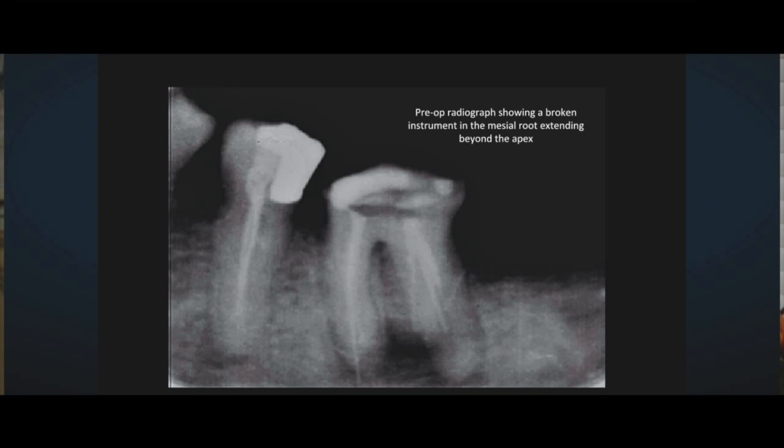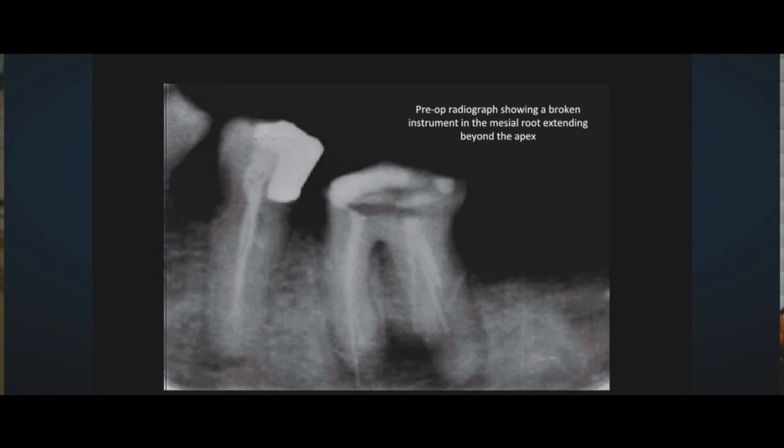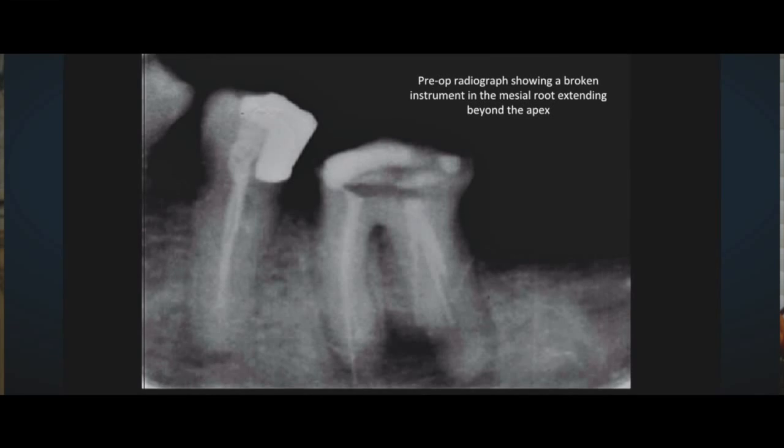This patient came to me. He was having pain, tender to percussion, and pain of palpation related to tooth number 19. On the radiograph, we found not very good root canals. The obturation was not extended to the working length. There were spaces, voids, and voids around the filling, and the mesolingual canal had an over-extended radiopaque structure.